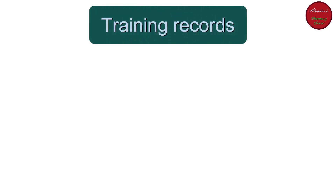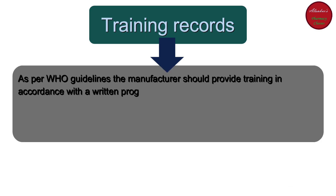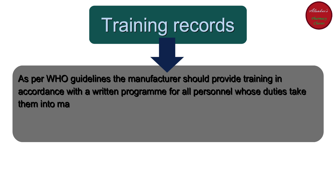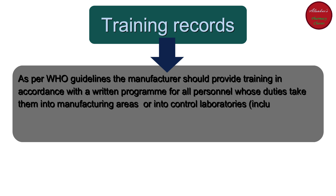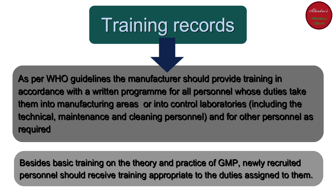The third type of records are training records. As per WHO guidelines, the manufacturer should provide training in accordance with a written program for all personnel whose duties take them into manufacturing areas or control laboratories. Besides basic training on theory and practice of GMP, newly recruited personnel should receive training appropriate to the duties assigned to them.